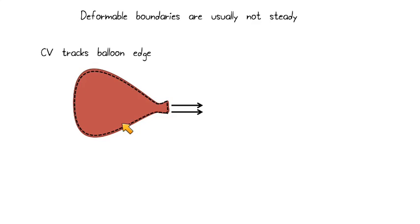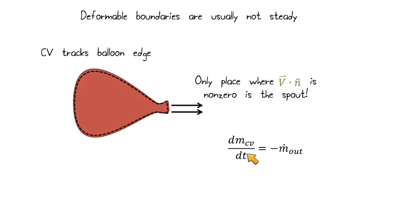Our control volume is going to always track the edge of this balloon no matter where it flies around. The only place in this balloon where V dot N is non-zero is at the spout where the mass exits. There's no mass crossing the boundary here. Our velocity is zero everywhere. So that means that we can't have a mass flow rate in equals a mass flow rate out. That's not going to happen. So that's going to kind of tell us, hey, this can't be steady state.